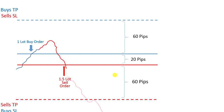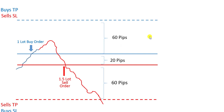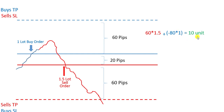Now imagine that in this case the price goes in our favor, goes down and down and hits the sell take profit and buy stop loss. When we hit it, we close all open orders, whether they are sell orders or buy orders. What would be our profit? We opened a 1.5 lot sell order here which gains 60 pips — that is 60 multiplied by 1.5 lots — plus minus 80 multiplied by 1, because we have a buy order worth 1 lot that has lost 80 pips. So the result would be 10 units.